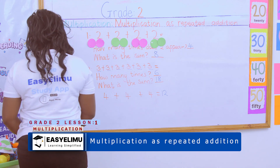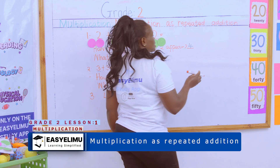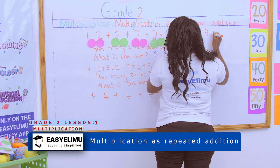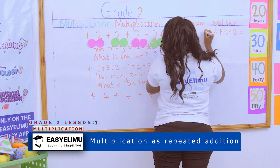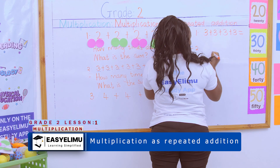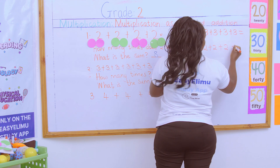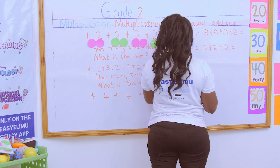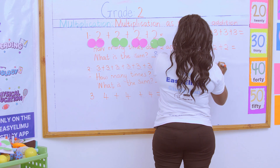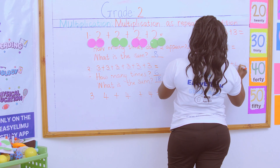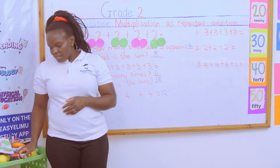Multiplication as repeated addition — now I want people to try this in their books. I have three plus three plus three plus three plus three — tell me how many times it appears and what is the sum. Then I have four plus four plus four plus four plus four plus four — tell me how many times it appears and the sum of the objects.